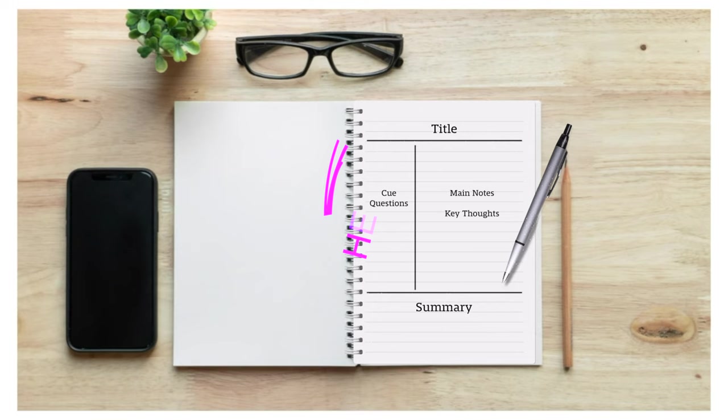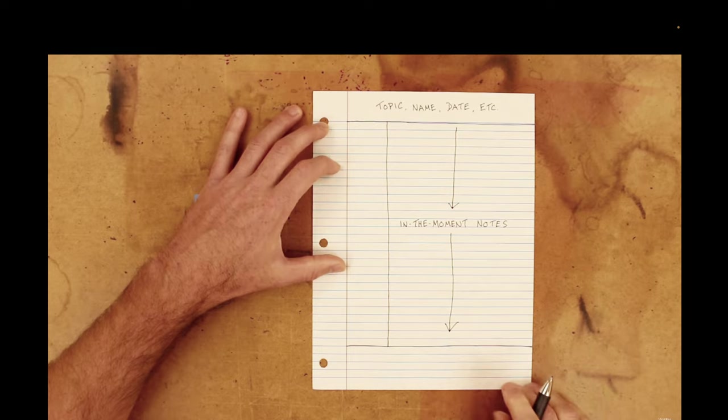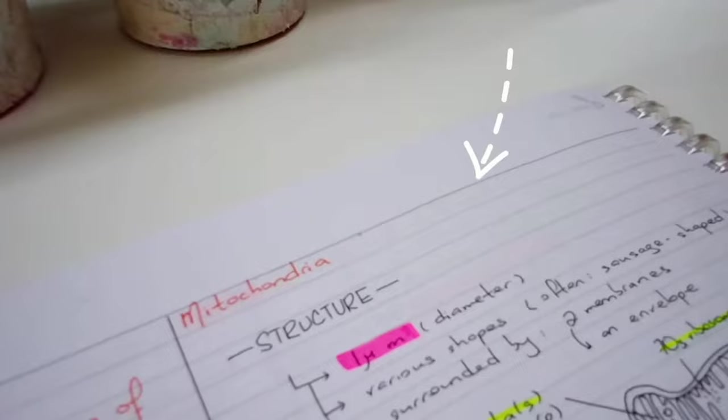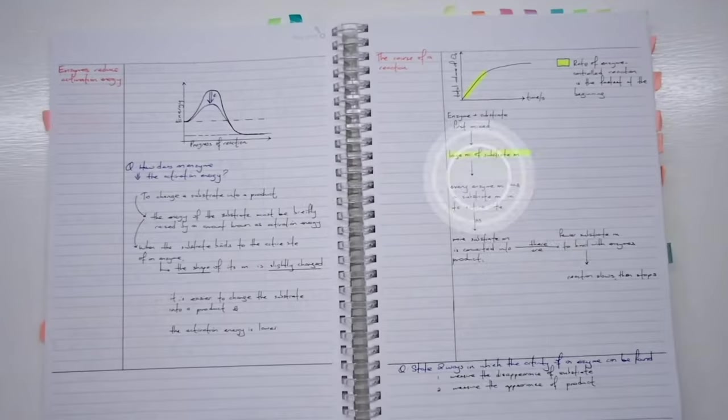The main note-taking area is where you write down the information. The summary area is where you write a brief summary of the main points, and the cue column is where you write keywords or questions that will help you remember the information later. This allows you to organize your notes in a way that makes it easy to find and review important information.